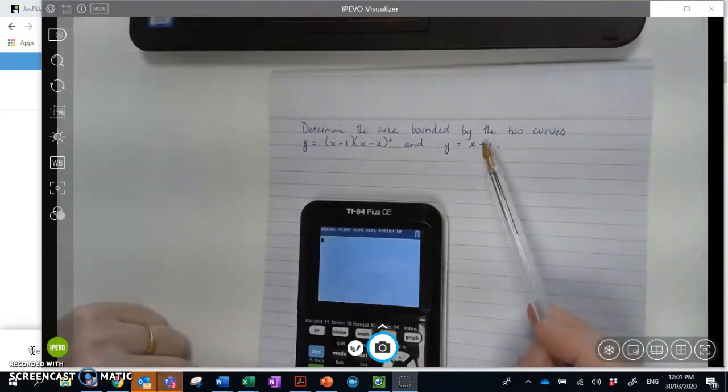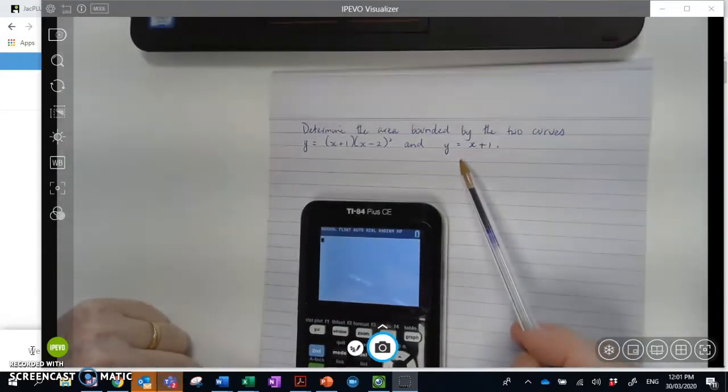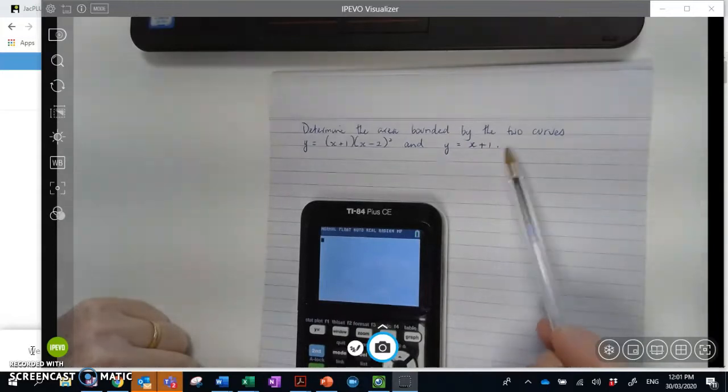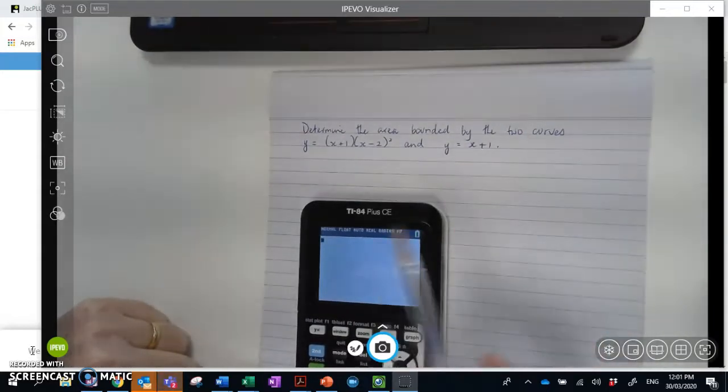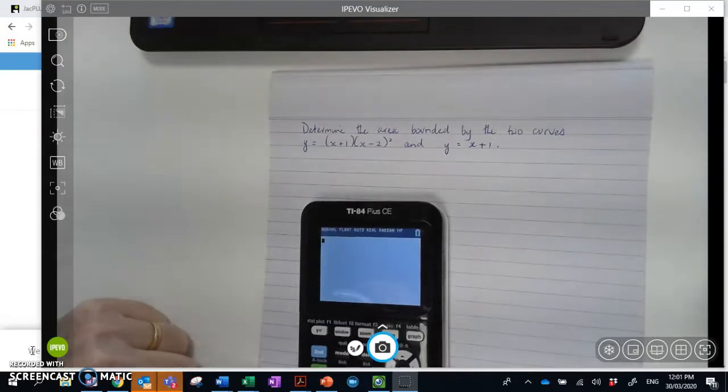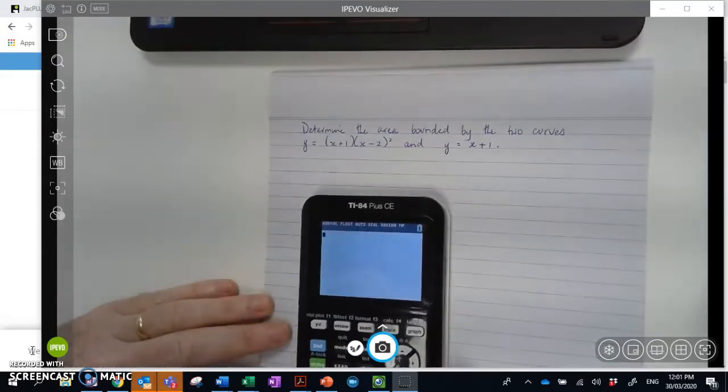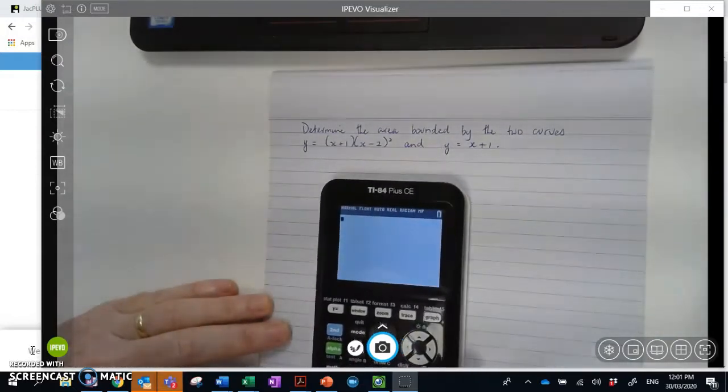So the previous video was looking at the area bounded by a curve and the x-axis. This one's just looking at two potential curves. So again it's TI-84 Active. We want to know how to use the graphics calculator to do this.